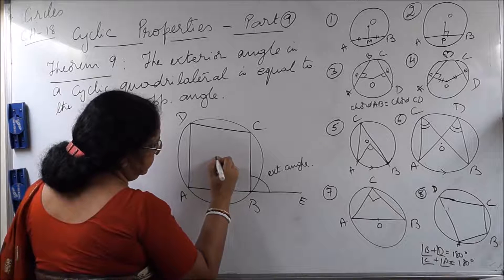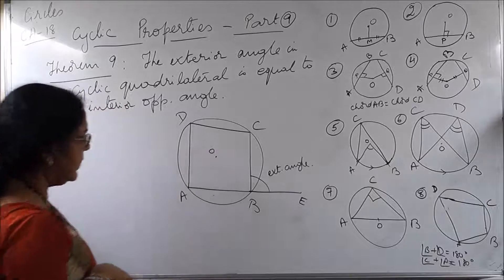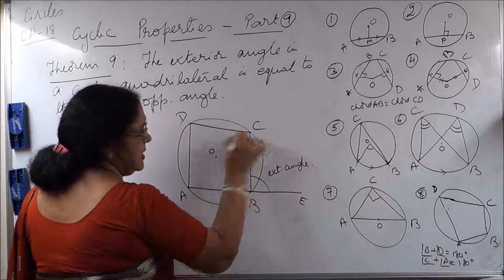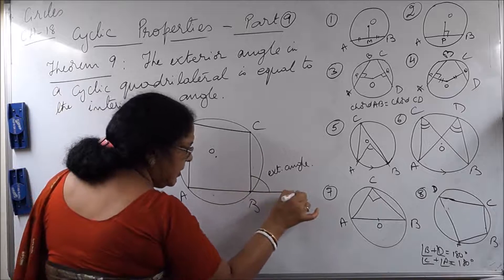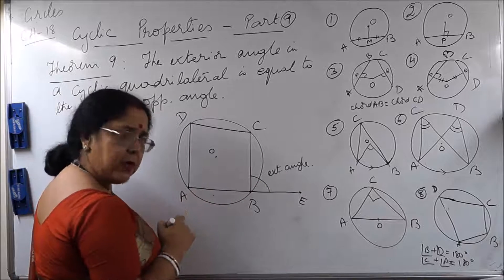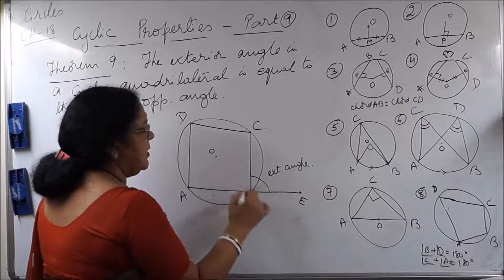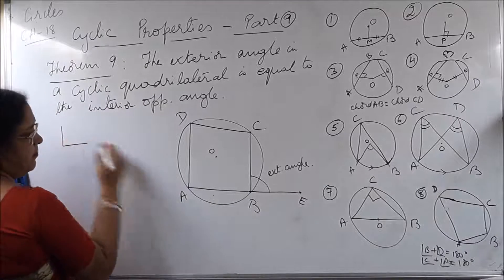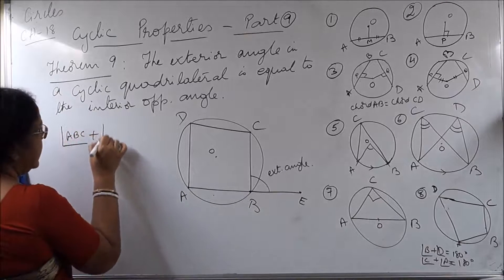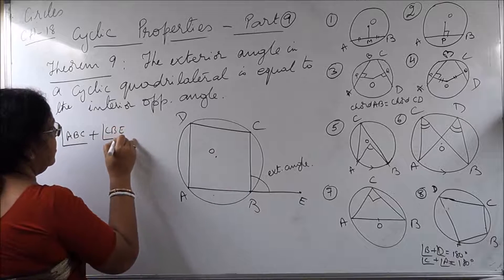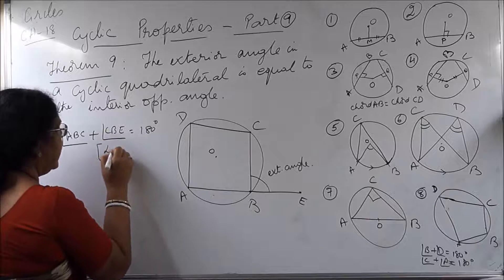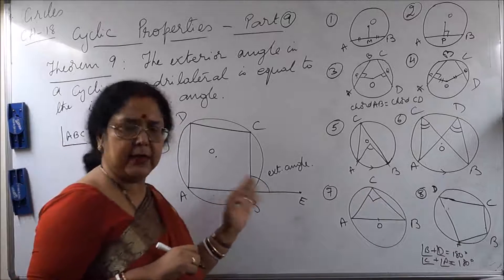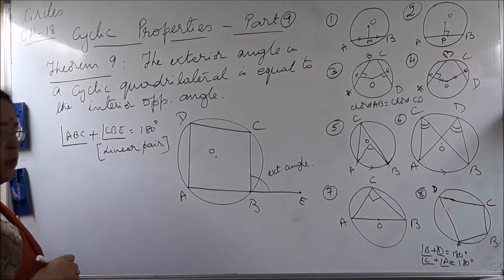Now, let us mark the center of the circle. We can see that angle ABC and angle CBE is 180 degrees because they are a linear pair — AB is a straight line, so these two angles are supplementary. So let us write: angle ABC plus angle CBE equals 180 degrees. The reason is linear pair — AB is a straight line and these two are adjacent angles to each other, so they form a linear pair equal to 180 degrees.